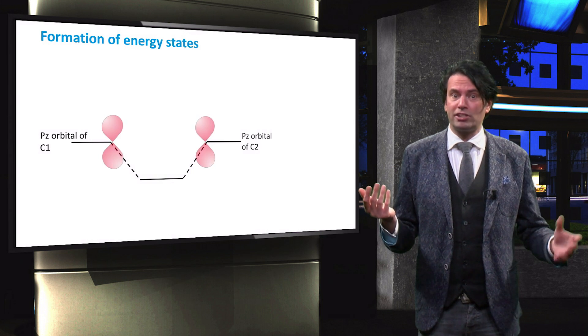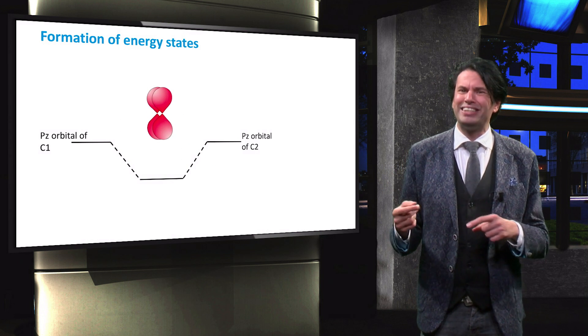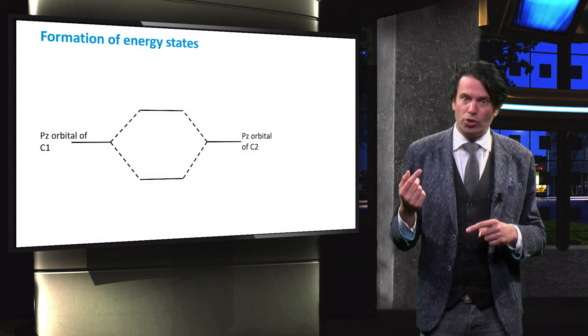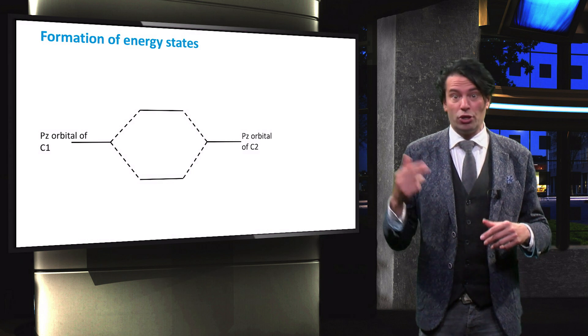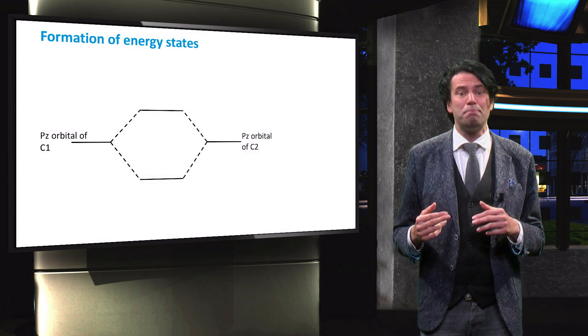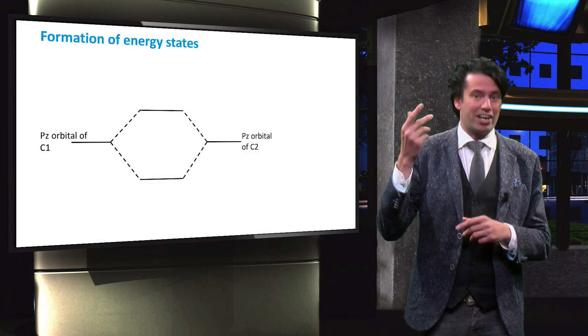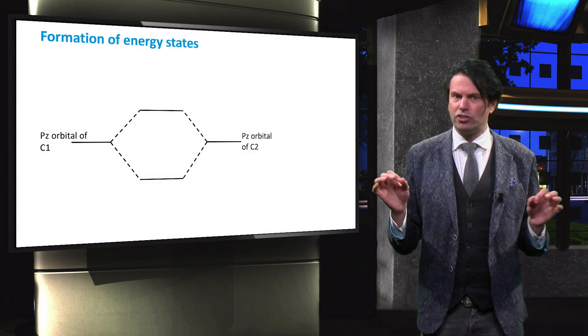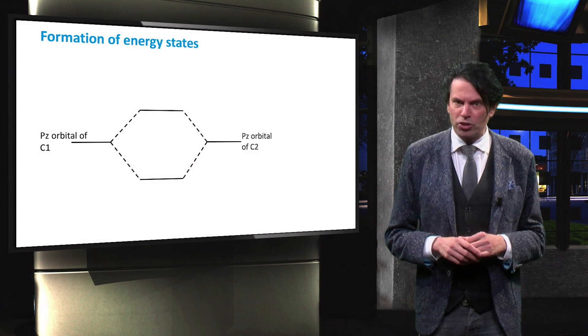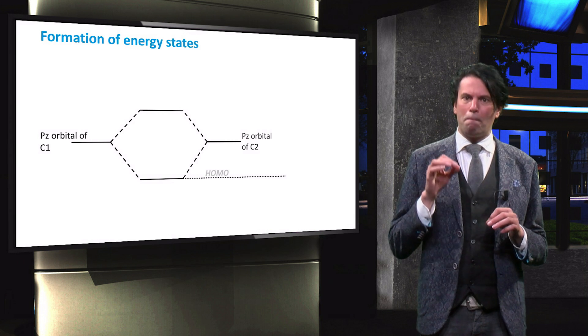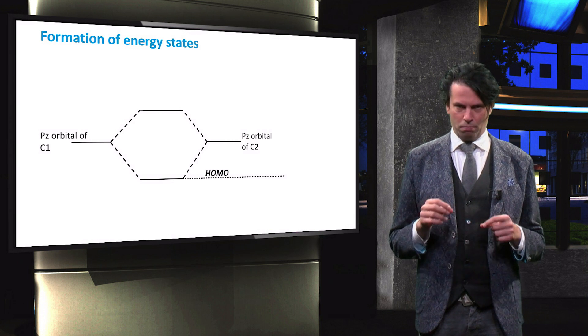The constructive intermixing of these orbitals gives rise to a delocalized pi orbital with a lower energy. Destructive intermixing, on the other hand, gives rise to an antibonding pi state with a higher energy level. This destructive and constructive intermixing splitting of molecular orbitals is what forms the bandgap in such organic molecules.